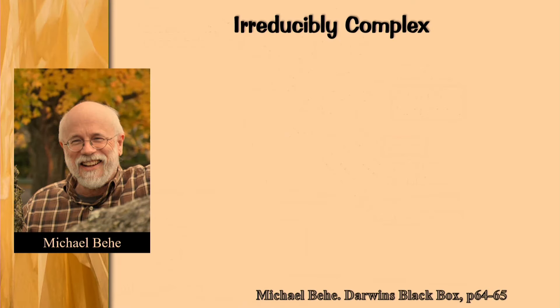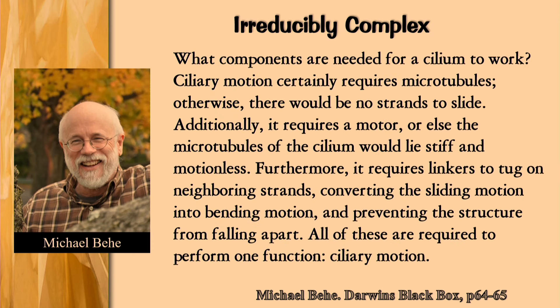Michael Behe, a professor at Lehigh University, describes the cilia as irreducibly complex. He says: what components are needed for the cilium to work? Cilium motion certainly requires microtubules — otherwise there would be no strands to slide. It additionally requires the motor proteins, the dyneins, or else the microtubules would lie stiff and motionless. Furthermore, it requires those nexin linkers to hold neighboring strands, converting sliding motion into bending motion and preventing the structure from falling apart. All of these are required to perform one function: ciliary motion.